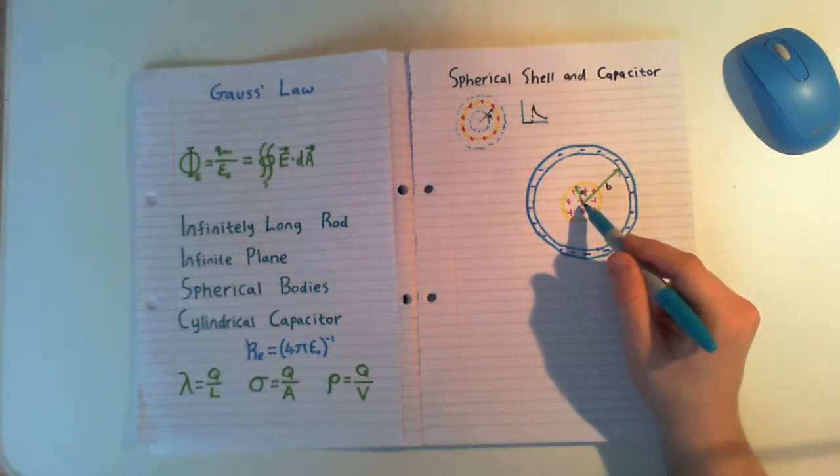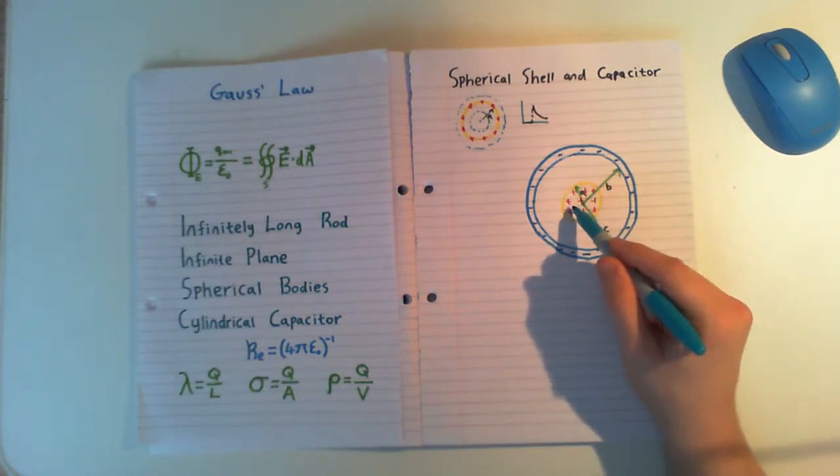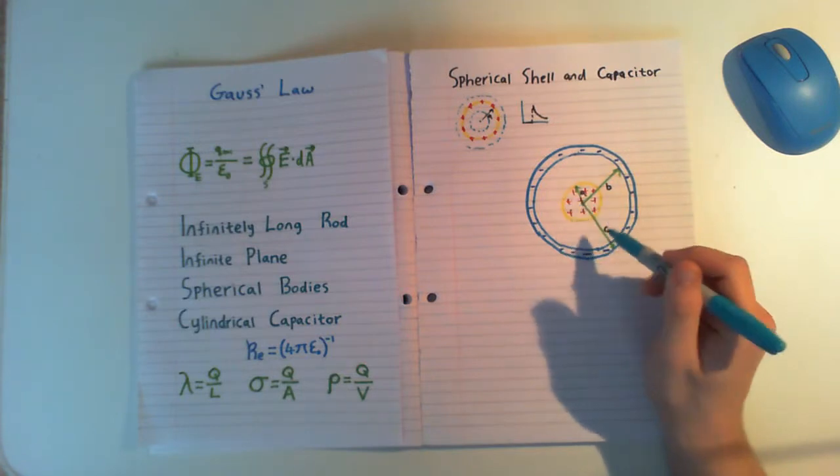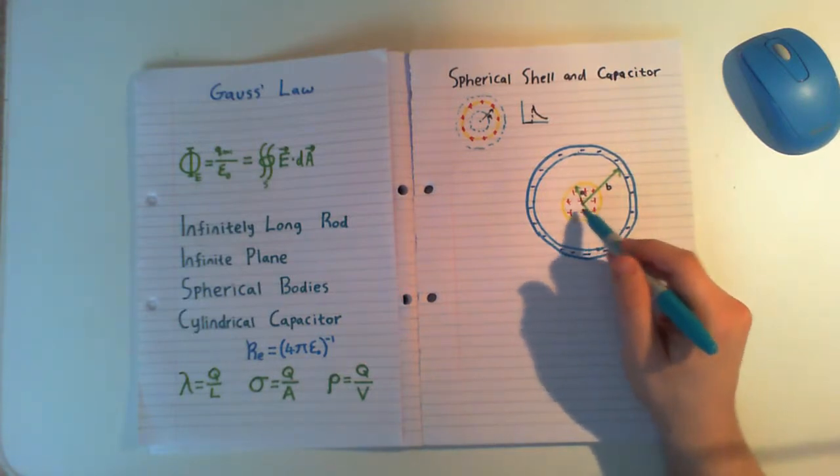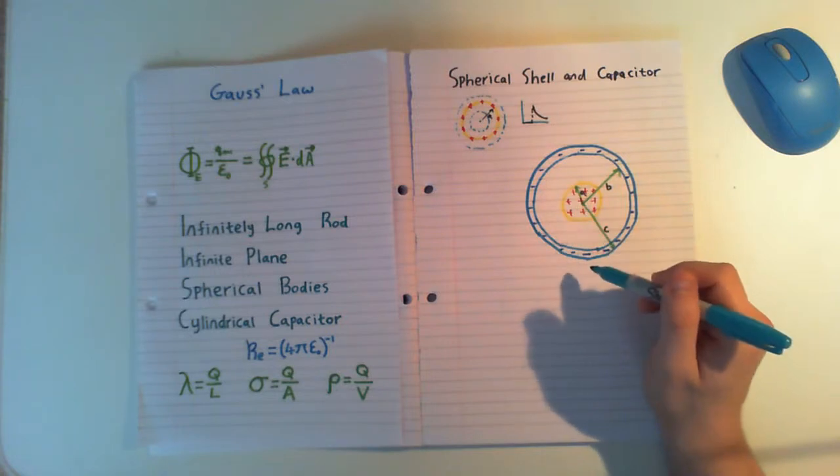So for our first one here, we know that this bit is conducting. It's our capacitor. This is a conducting point. So anything inside here is going to be zero. We're going to have no electric field. So we know this bit's zero. So we don't need to do any math for that bit there. So that bit's struck off straight away.